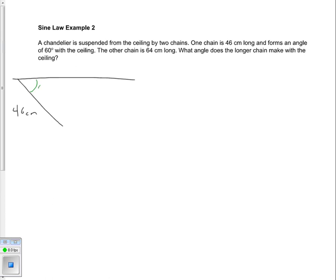It makes an angle of 60 degrees with the ceiling, so we'll call this angle 60 degrees. The other chain is 64 centimeters long, and we want to figure out what angle it makes with the ceiling, which we don't know. This is 64 centimeters long, and I'm a terrible artist, so this is my chandelier.